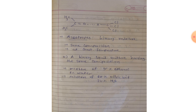Our next point is azeotropes. What is an azeotrope? Some liquids on mixing form azeotropes, which are binary mixtures having the same composition in both liquid and vapor phase at a constant temperature. In such a case, it is not possible to separate the components by fractional distillation.